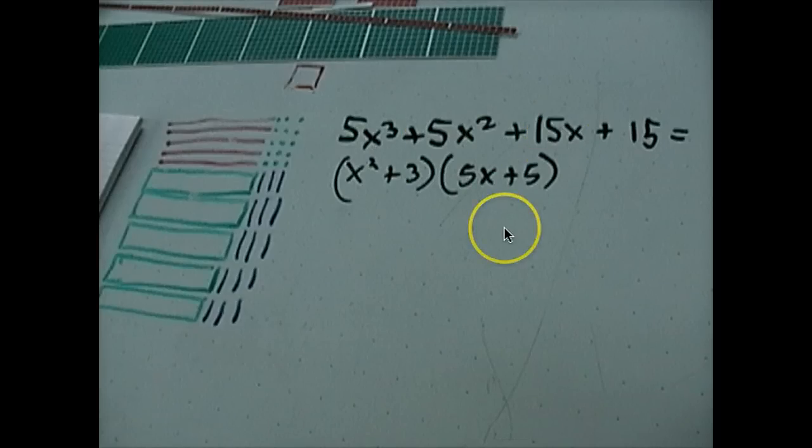There it is. 5 X to the third. 5 X squared. 15 X and 15. Love all the 5s. Right? She had fun with that. Now, we could probably factor this by grouping. Right? But why would you need to when you can just look at it and go, oh, X squared plus 3 and 5 X plus 5. Right?